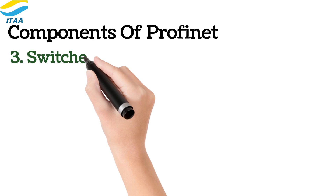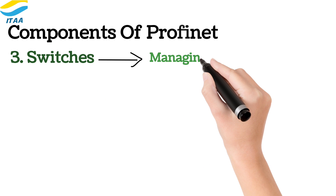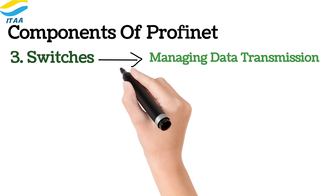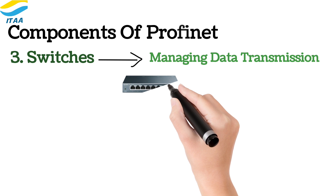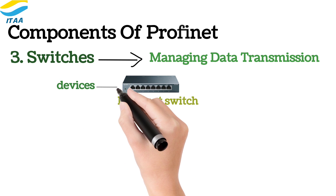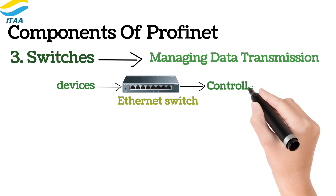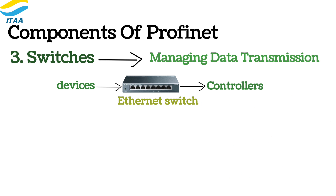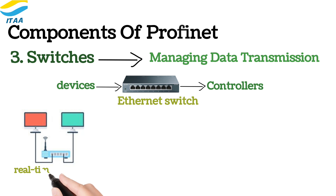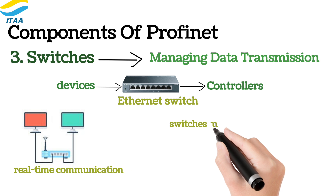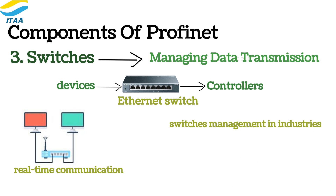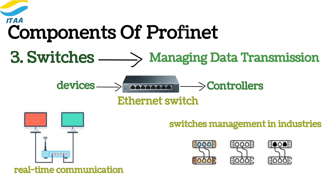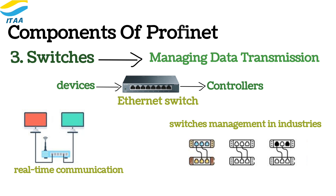Switches are critical for managing data transmission within a PROFINET network. They serve as communication hubs, routing data to the appropriate devices and controllers. Switches can also perform filtering, which prioritizes critical data for real-time communication. In industrial environments, managed switches are often used to ensure optimal traffic flow and prevent network congestion, especially in complex setups with multiple devices communicating simultaneously.